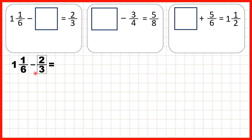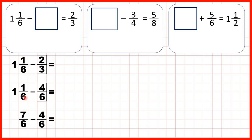To subtract fractions we need the denominators to be the same, so we need to find a fraction equivalent to 2 thirds which has a denominator of 6. We can rewrite our question as 1 and 1 sixth minus 4 sixths — that's equivalent to 2 thirds because 3 times 2 is 6 and 2 times 2 is 4. But now we need to subtract 4 sixths and we only have 1 sixth in our mixed number, so we need to change our mixed number to an improper fraction. 1 times 6 is 6, plus 1 is 7, so that's 7 sixths. Now we can take 4 sixths away: the denominator stays the same and 7 minus 4 is 3, so our missing fraction is 3 sixths.